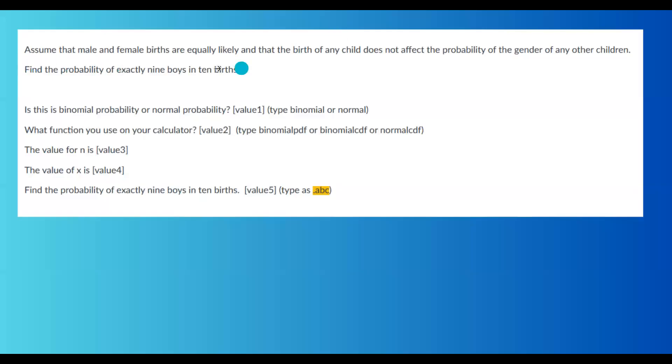Male and female births are equally likely, 50 percent each, and the birth of any child doesn't affect the probability of gender of any other children. Find the probability of exactly nine boys in 10 births. Is this binomial or not? What function are you going to use in your calculator? What is the value for n? What is the value for x?